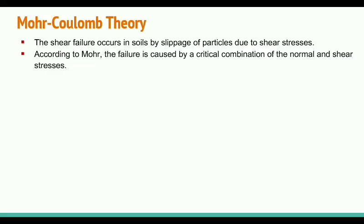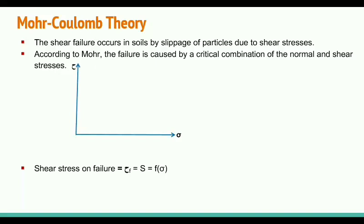The shear stress at failure is a function of normal stress, denoted as τ_f = f(σ). τ_f represents shear stress at failure, which also equals the shear strength S. So we write τ_f = S = f(σ). This critical combination can be plotted on a diagram between shear stress and normal stress sigma at failure. Every coordinate of the Mohr circle gives all possible combinations of shear stress and normal stress, and we need to find the critical one.